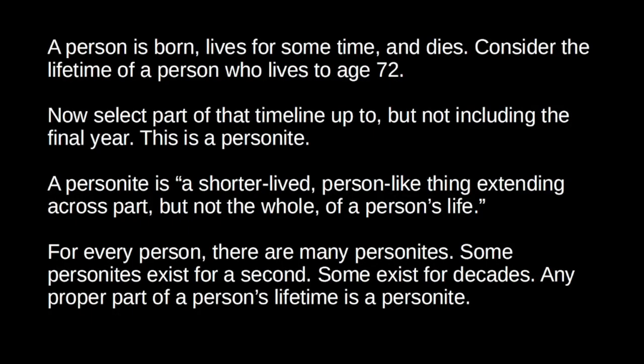The personite problem. So first of all, what exactly is a personite? Well, consider the lifetime of a whole person. A person is born, lives for some time, and then dies. So imagine the timeline of your whole life from birth to death. Let's say that you make it to 72. This represents the life of a whole person, but now we can select just part of this timeline. Take the same timeline of a life and consider the life up to but not including the final year — so up to the age of 71. This is a personite.